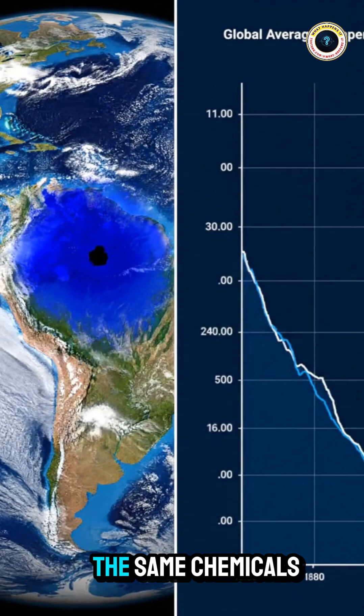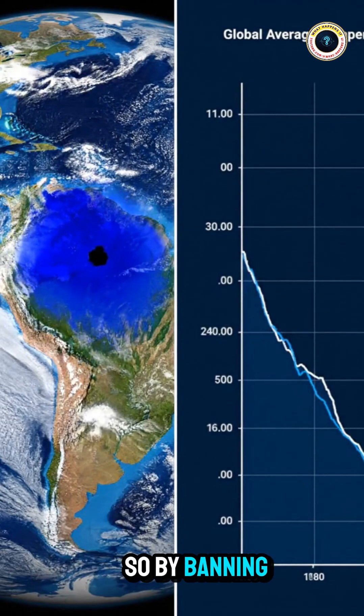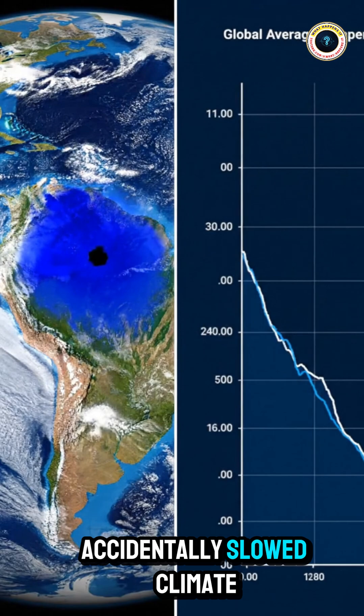But here's the open loop. The same chemicals that destroyed ozone also warmed the planet. So by banning them, we accidentally slowed climate change too.